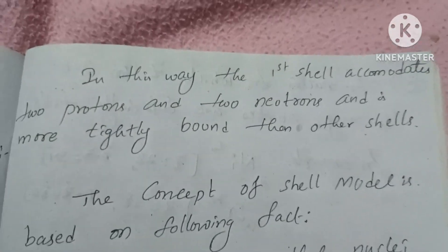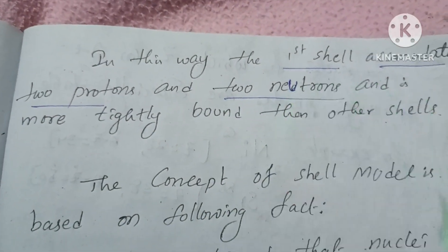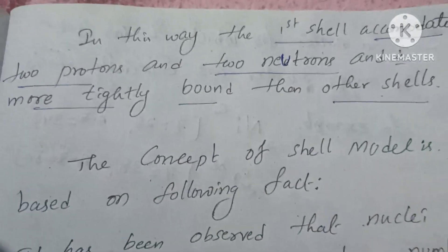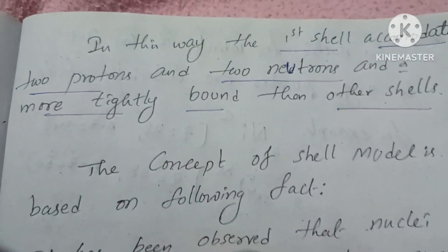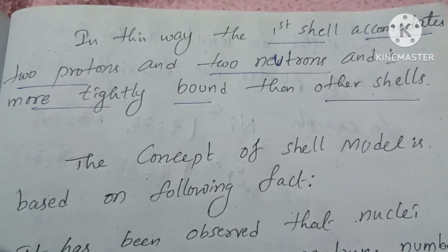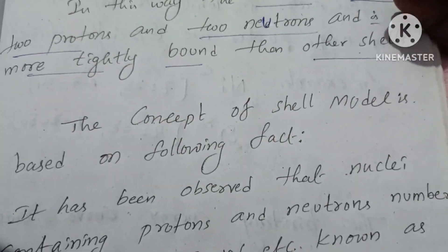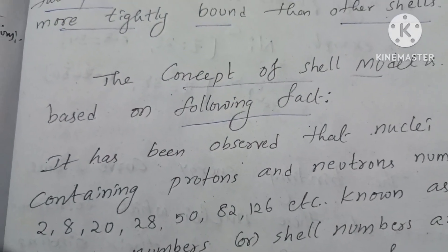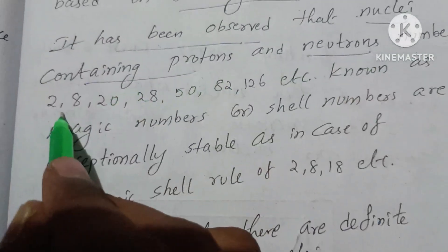According to the Pauli exclusion principle, protons and neutrons have opposite spins occupying a particular shell. In the first shell, the two protons and neutrons are very tightly bound. The other shells are more tightly bound than others.